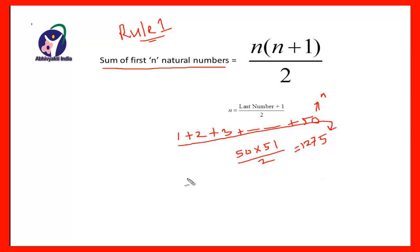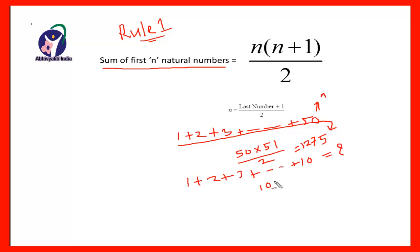Take another example: 1 + 2 + 3 + ... + 10. To find the sum of the first 10 natural numbers, it will be 10 × 11 divided by 2, and therefore 5 × 11 = 55. The sum of the first 10 natural numbers is 55.